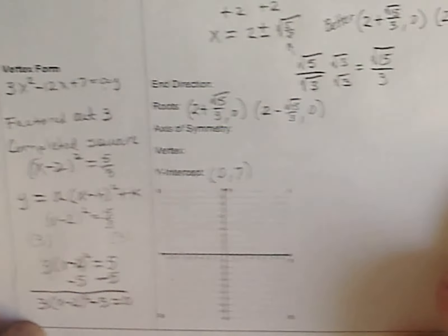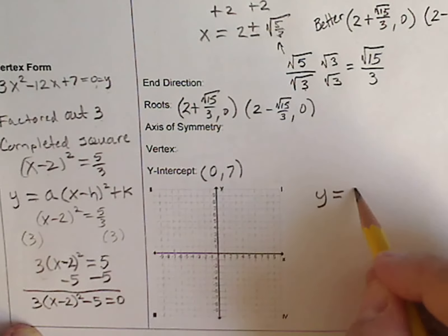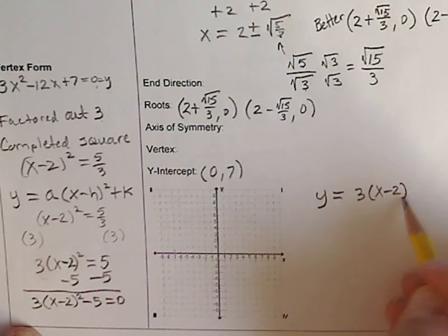Symmetrically flipping this, we can comfortably state that y is equal to 3x minus 2 squared minus 5.